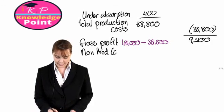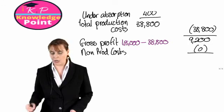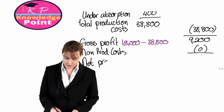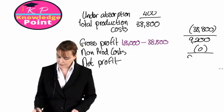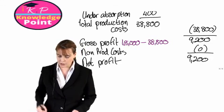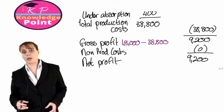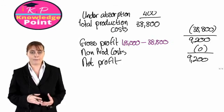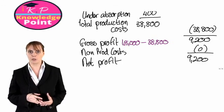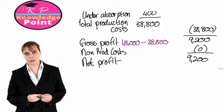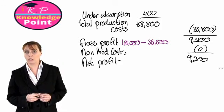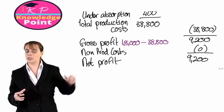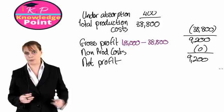We don't have any non-production cost information, so that's £0. Our net profit is therefore £9,200. And that's our absorption costing profit calculation done. The key thing to remember here is that an under absorption increases our production costs, which means an over absorption decreases production costs.